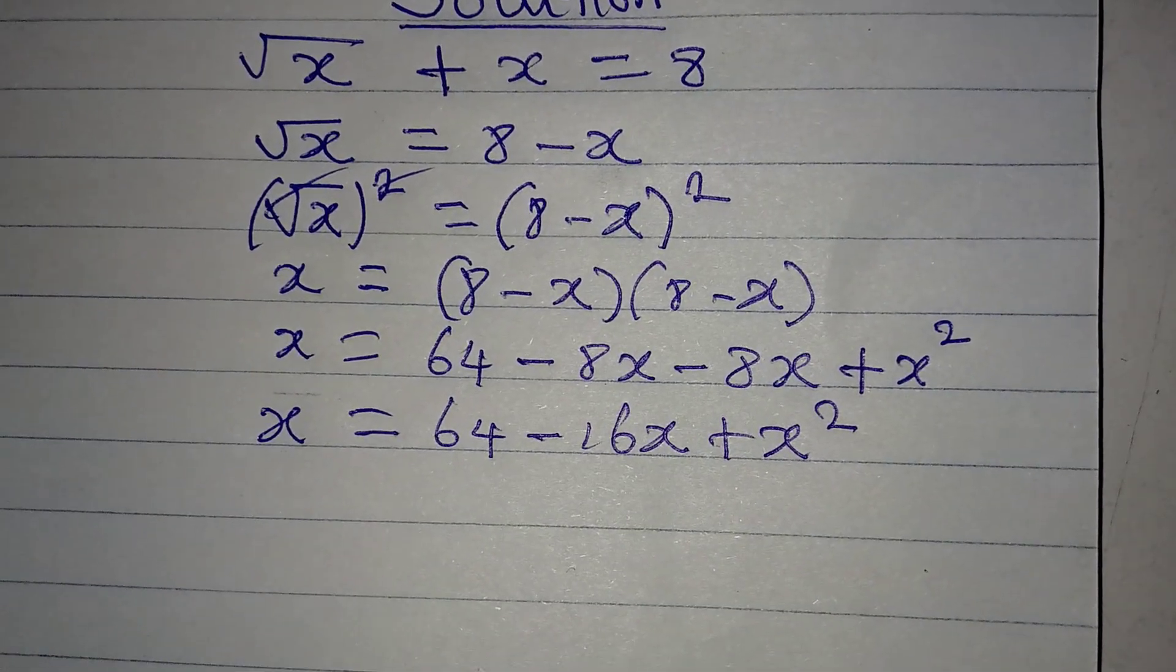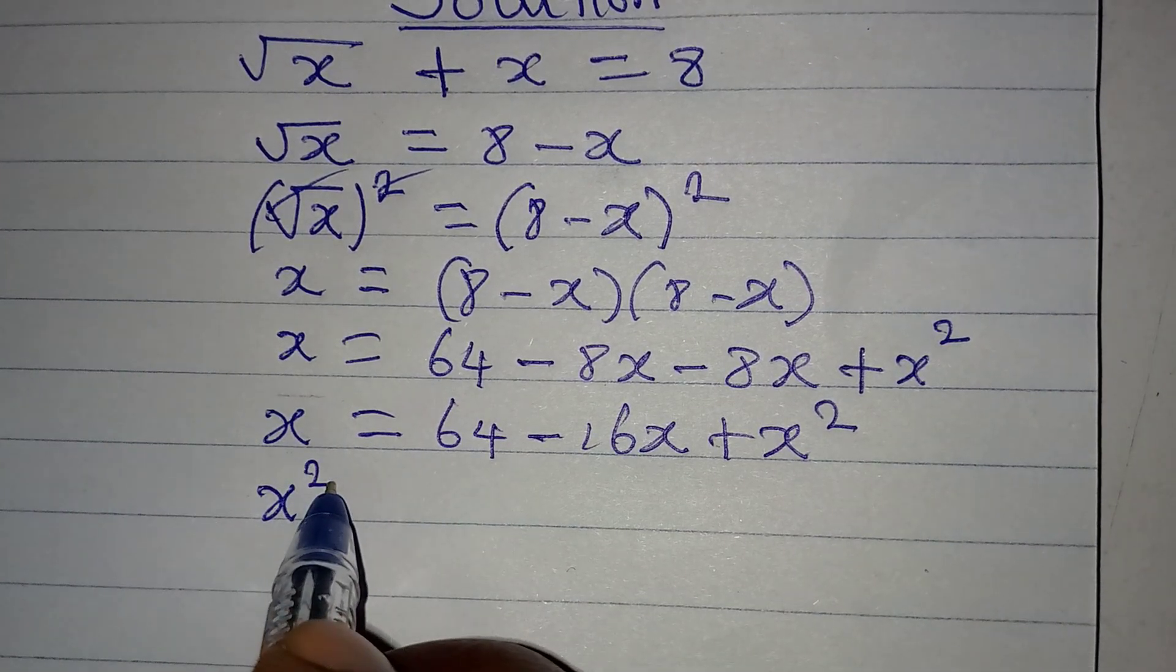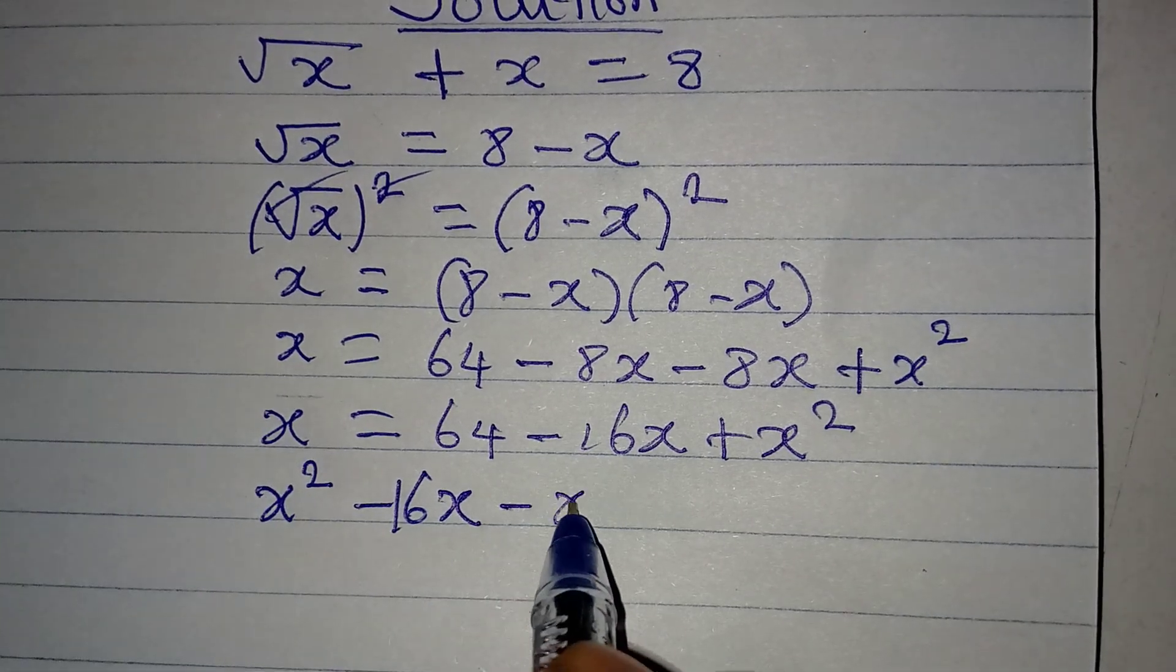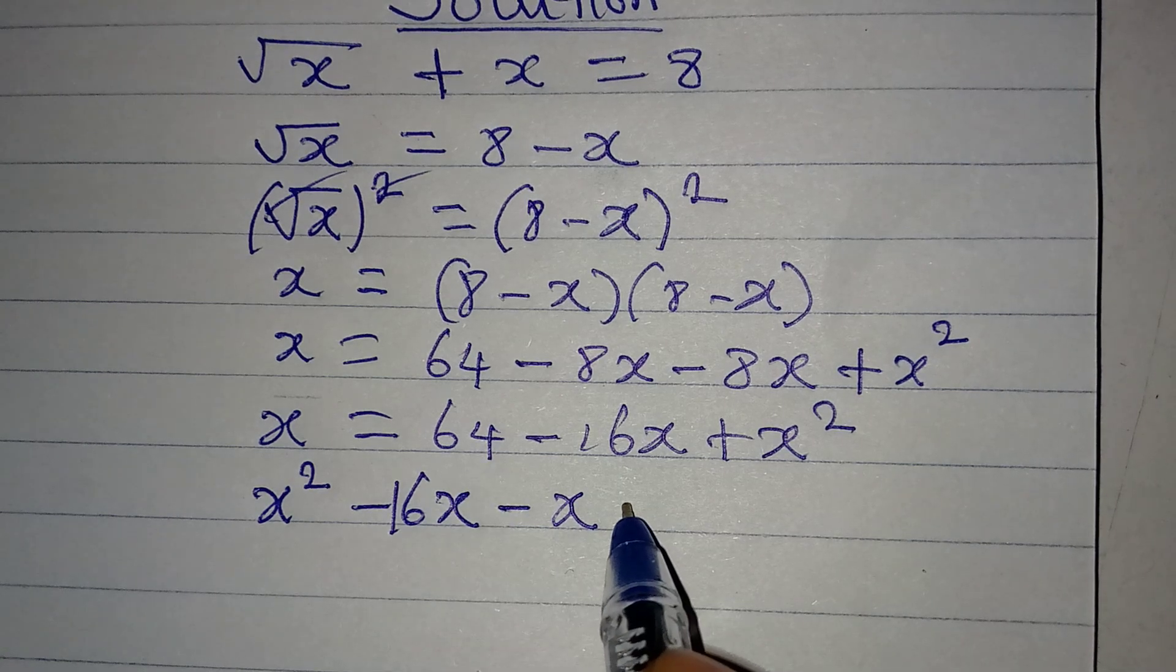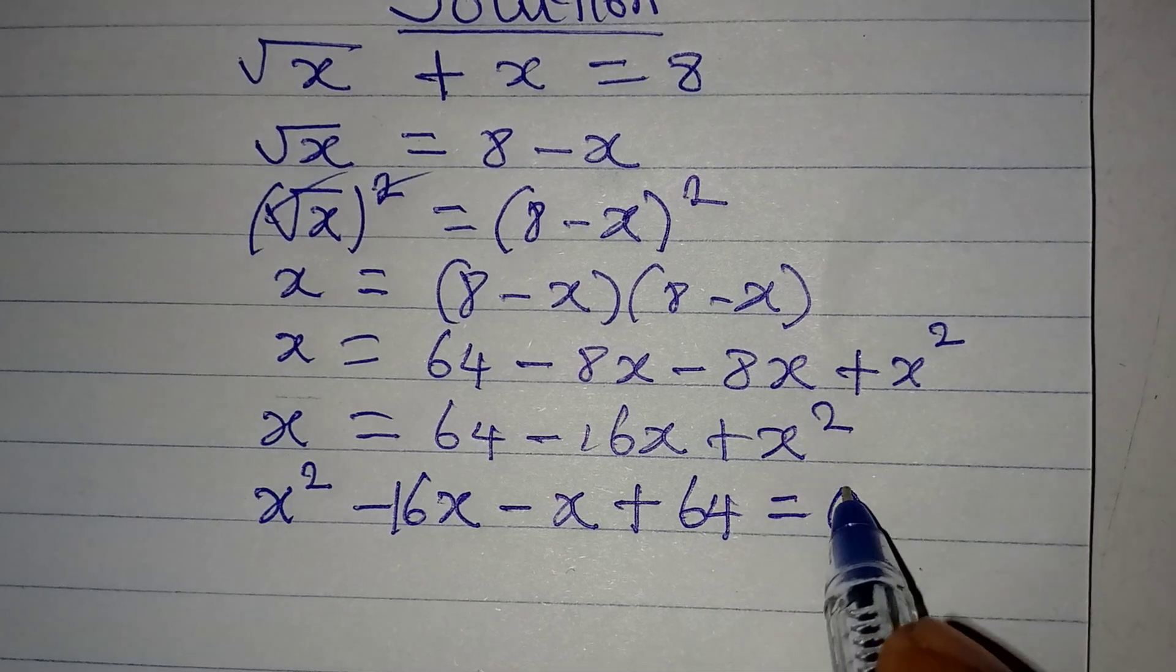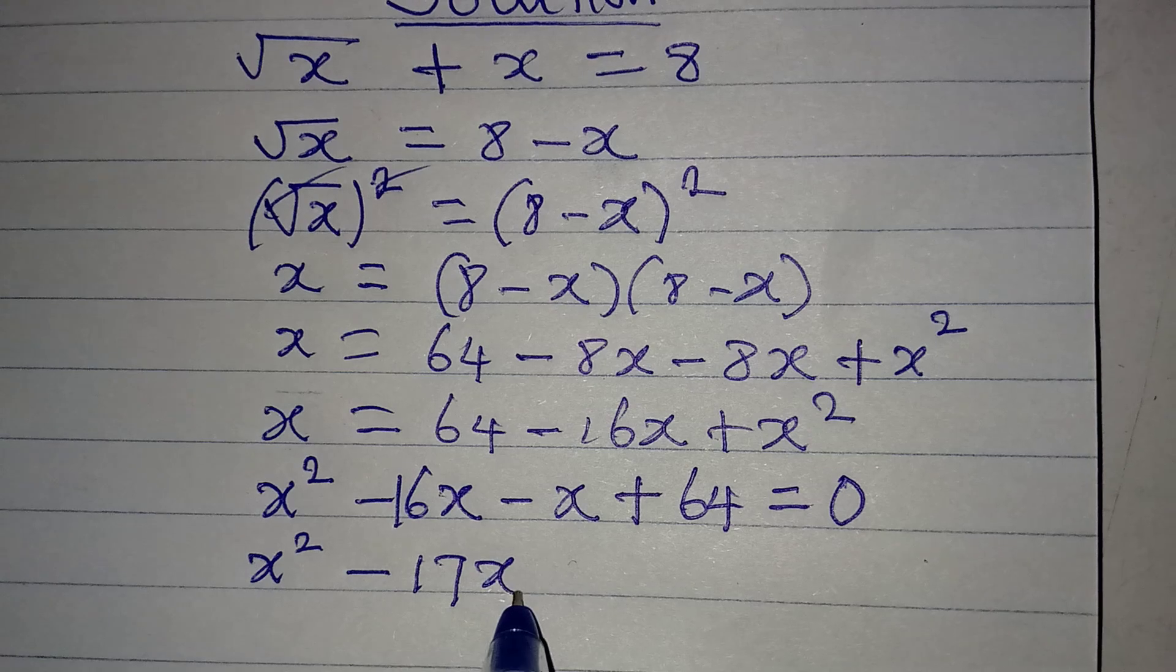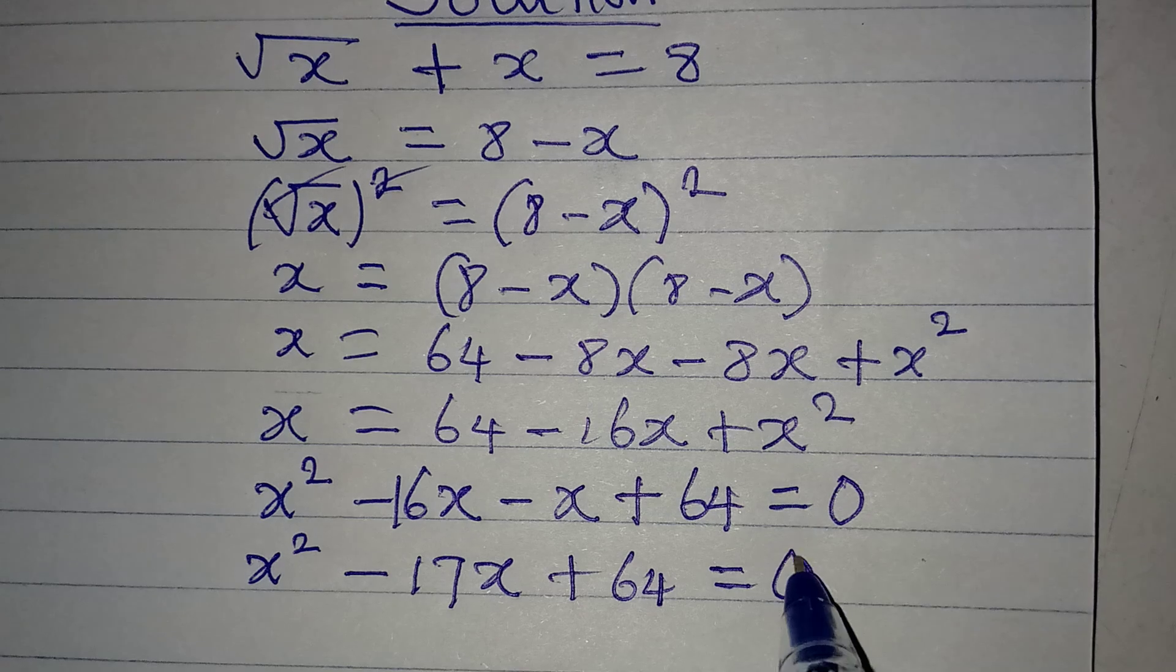Now let's continue. x will be equal to 64 minus 16x plus x squared. Now let's deal with this quadratic equation. I write x squared first, then minus 16x, then this becomes minus x on the other side. And then this 64 is still plus 64. And everything will now be equal to 0.